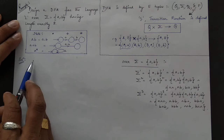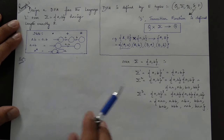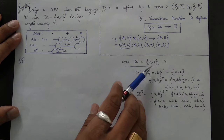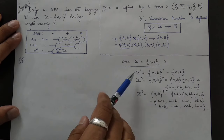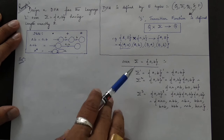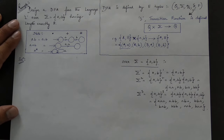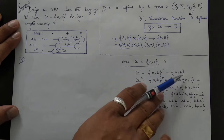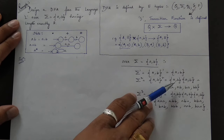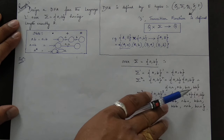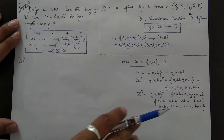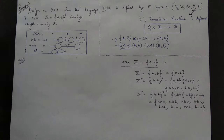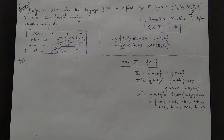Over input alphabets a and b I have given three cases. Sigma to the power 1 means {a, b}. Sigma to the power 2 means {a, b} cross {a, b}, which gives: aa, ab, ba, bb. Sigma to the power 3 extends this further. For sigma to the power 5 there is no simple maximum; for that I will provide a formula.